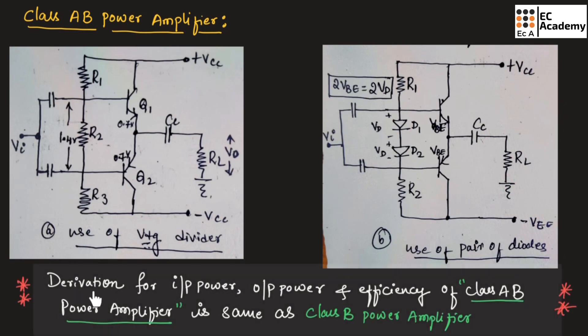Here, you need to remember that derivation for input power, output power, efficiency of class AB power amplifier is same as class B power amplifier. For the derivation of input power, output power and efficiency of class AB amplifier, you can refer the videos of class B power amplifier.